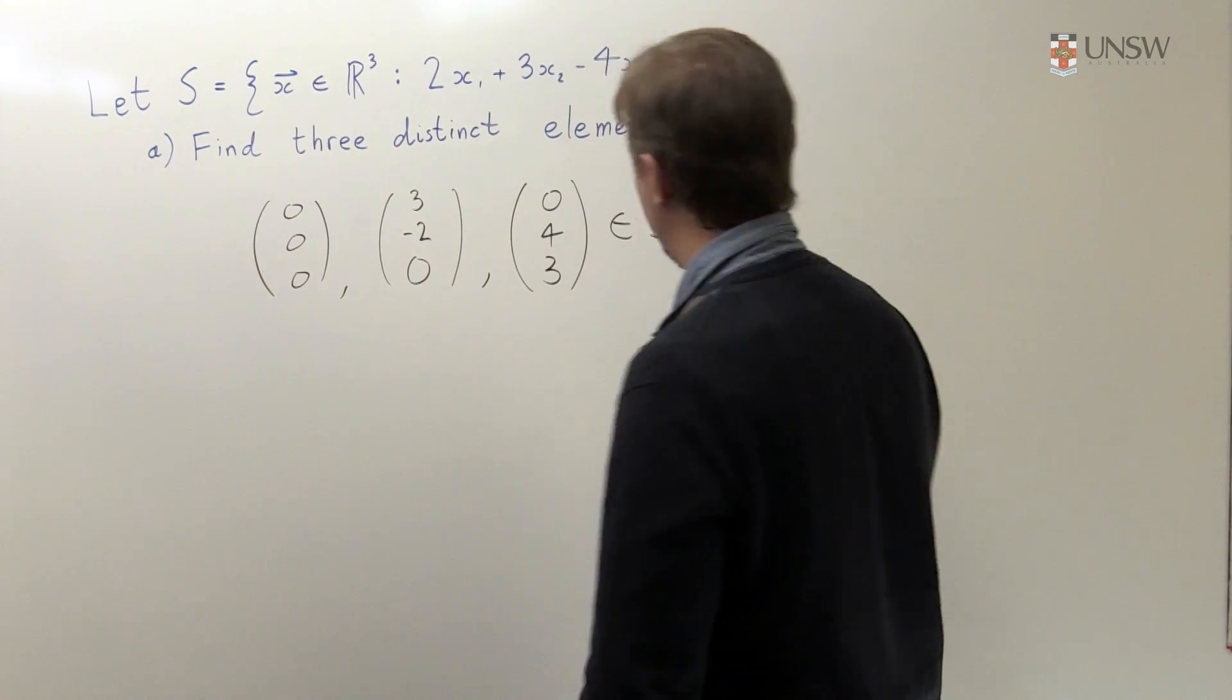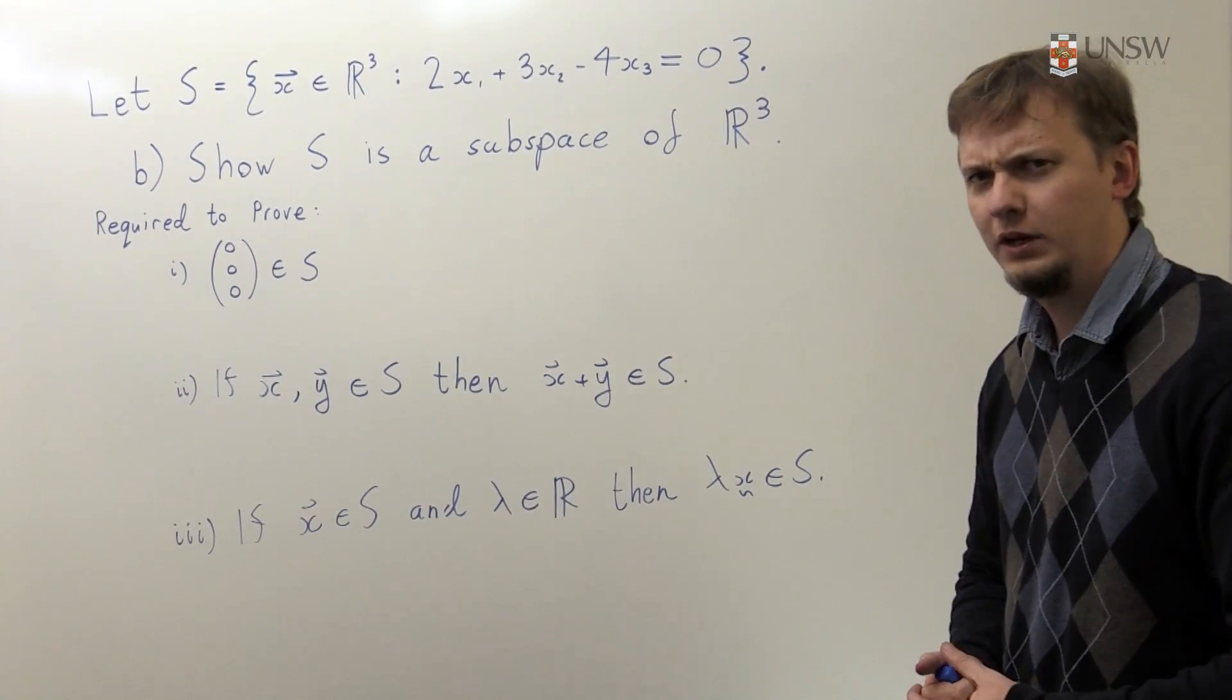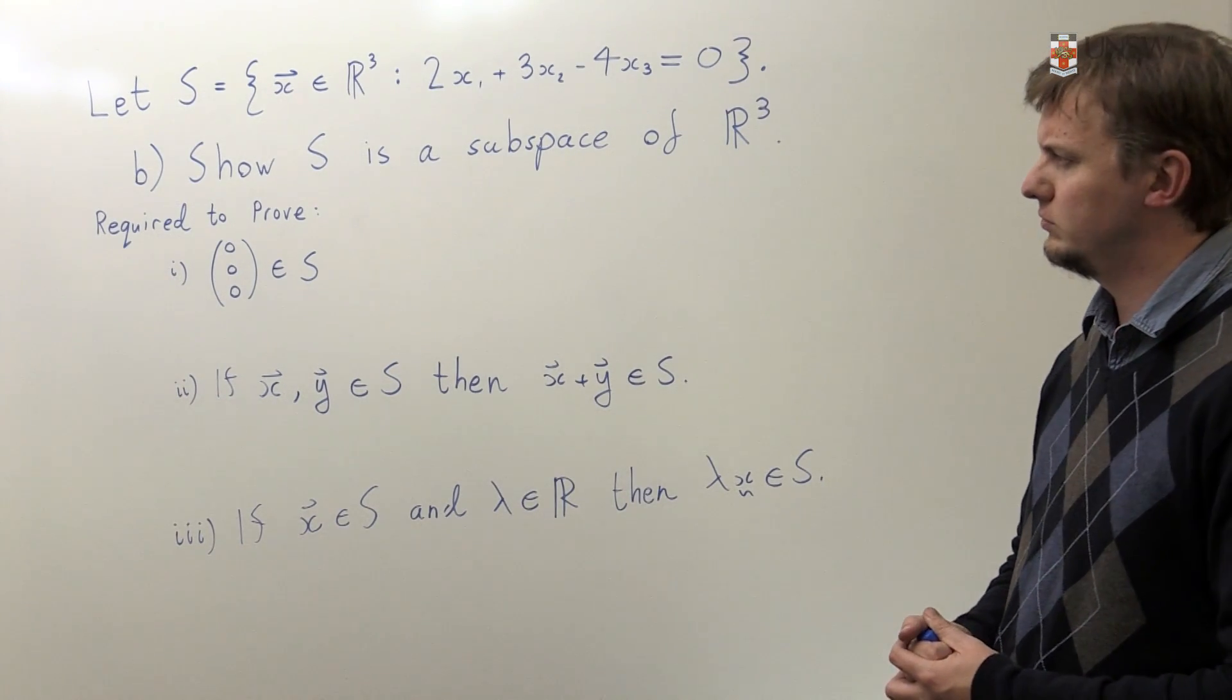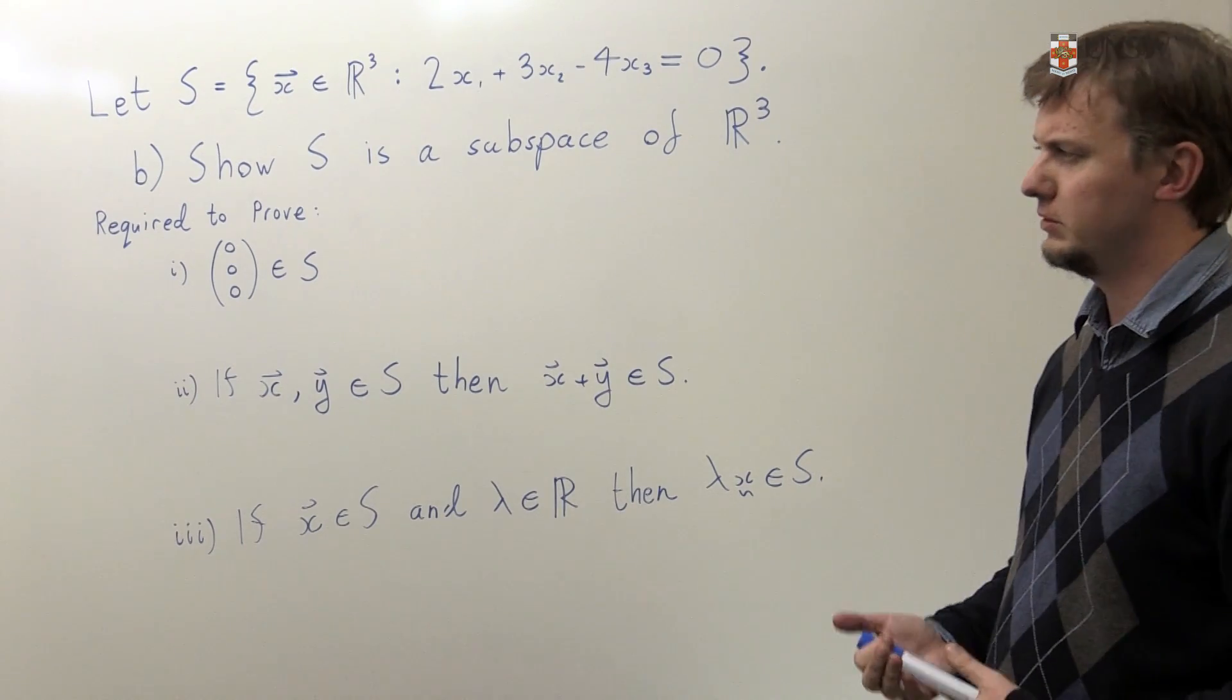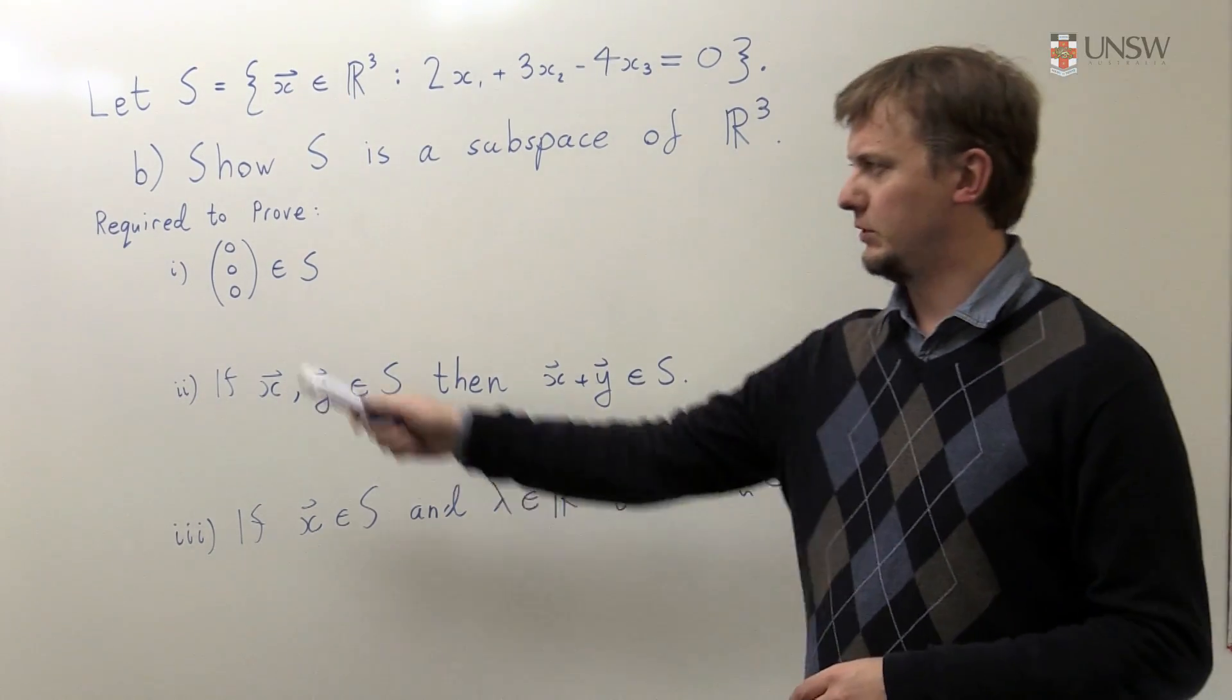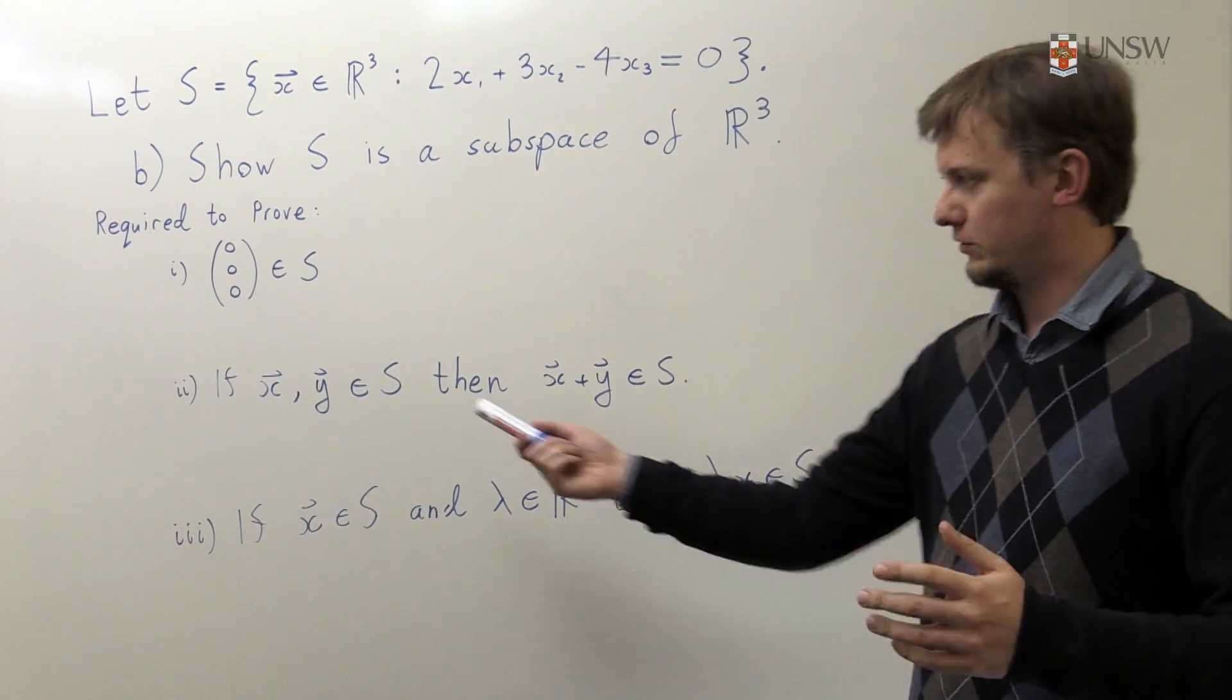All right, so how do we show that S is a subspace of R³? Well, we want to use the subspace theorem. But to use the subspace theorem we need to prove three things. Firstly, we need to prove that the zero vector from R³ is in S.